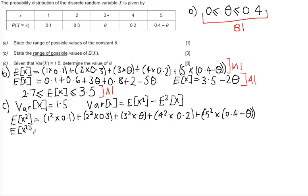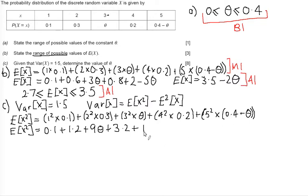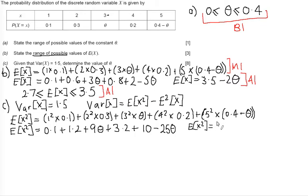Working through carefully: 1 times 0.1 is 0.1, plus 4 times 0.3 is 1.2, plus 9 theta, plus 16 times 0.2 is 3.2, plus 25 times 0.4 is 10, minus 25 theta. Simplifying: 0.1 plus 1.2 plus 3.2 plus 10 is 14.5, and 9 theta minus 25 theta is minus 16 theta. So E(X²) equals 14.5 minus 16 theta.